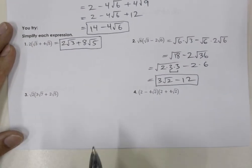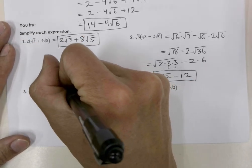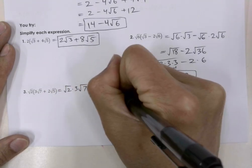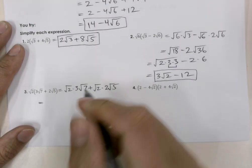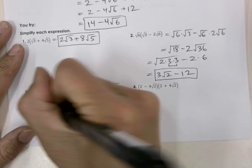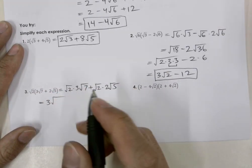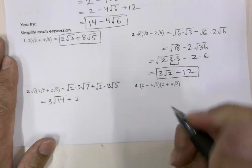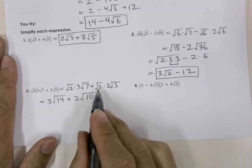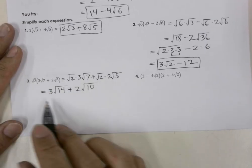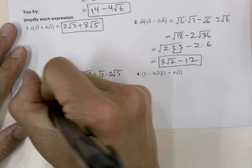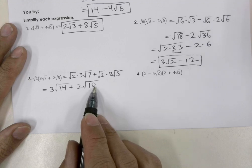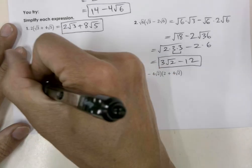Number 3 is going to be similar. It's square root 2 times 3 square root 7, plus square root 2 times 2 square root 5. Working this out, we get 3 on the outside times square root of 14, plus 2 on the outside times square root of 10, since 2 times 5 is 10. Checking if we can simplify: 14 is 2 times 7, and 10 is 2 times 5, so we can't simplify these anymore. That's our answer.